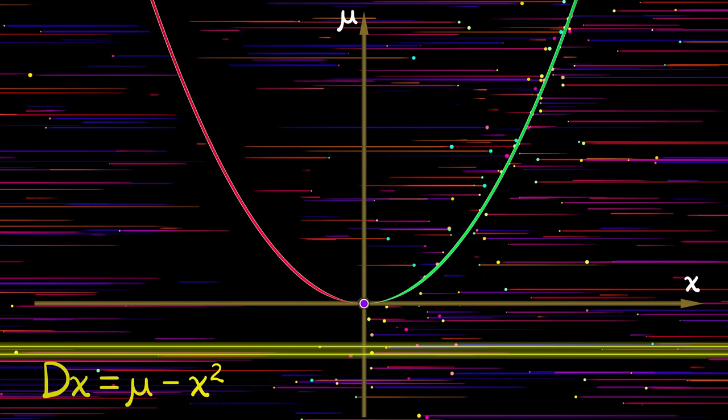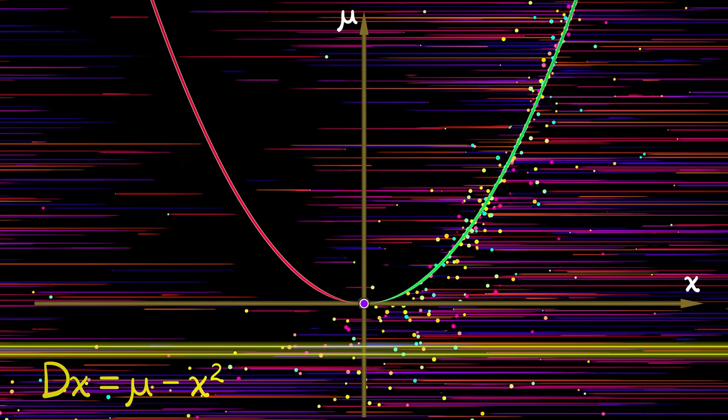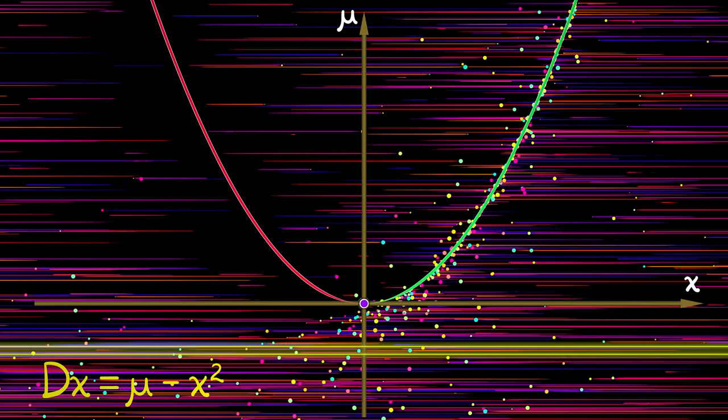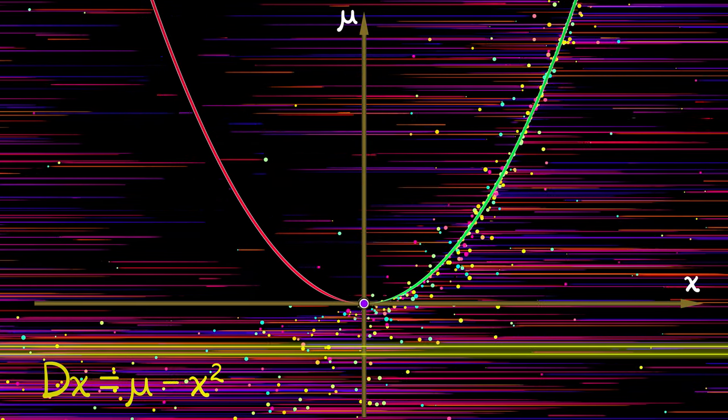And what you're going to see is that depending on the value of mu, interesting things happen. When mu is negative, in this case, you're always moving off to the left. dx is always negative.